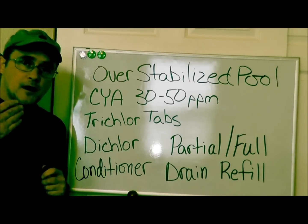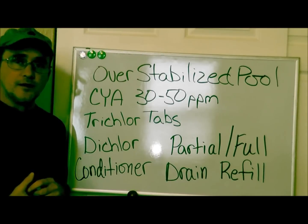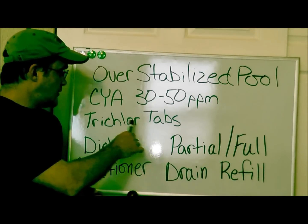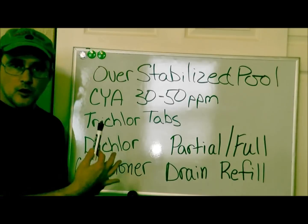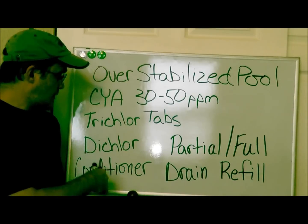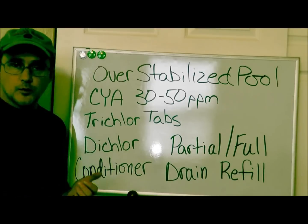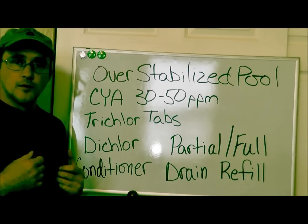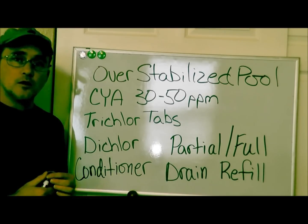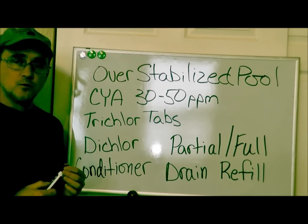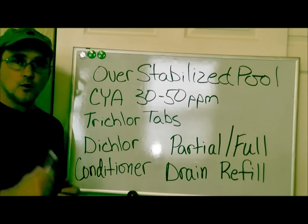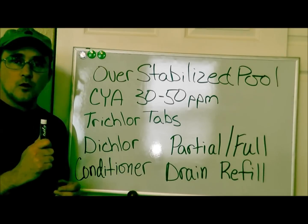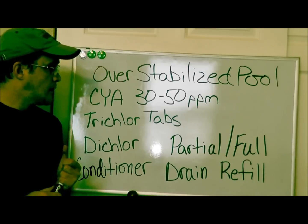Maybe you've been overdoing the liquid conditioner, or maybe you've used too many trichlor tabs for a long period of time. You've been shocking your pool on a weekly basis with dichlor, or chlorinating your pool on a weekly basis with dichlor. You never want to do that — you always want to use either the liquid or the granular chlorine.